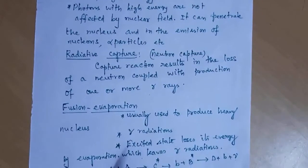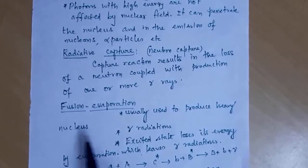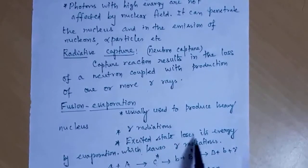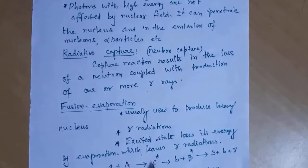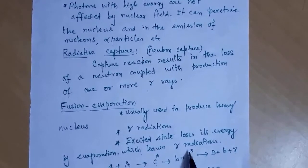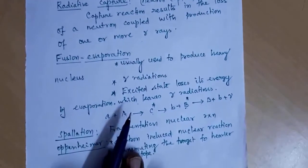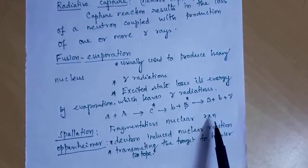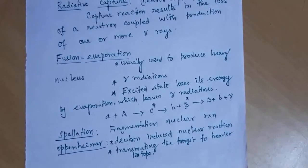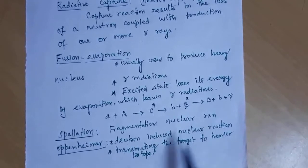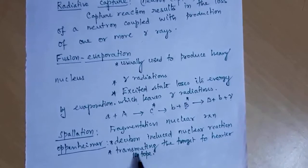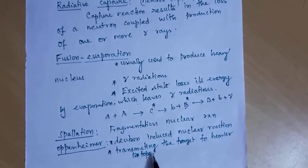Fusion evaporation is usually used to produce heavy nuclei. Gamma radiation is involved — the excited state loses its energy by evaporation: A plus A gives product B through an excited intermediate, which also loses energy by gamma radiation — this is known as evaporation. Spallation involves fragmentation of heavy nuclei into smaller particles. Oppenheimer-Phillips reactions involve deuteron-induced nuclear reactions — a transmutation process where lighter isotopes are converted into heavier isotopes.